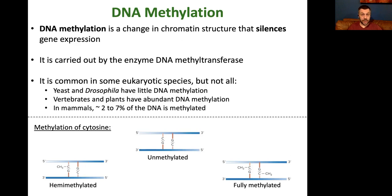Yeast, a very simple eukaryote, and Drosophila, a more complex eukaryote, have little DNA methylation, whereas vertebrates — anything with a backbone — and plants, interestingly, have a lot of DNA methylation. In mammals such as us, about five percent of your DNA is methylated.